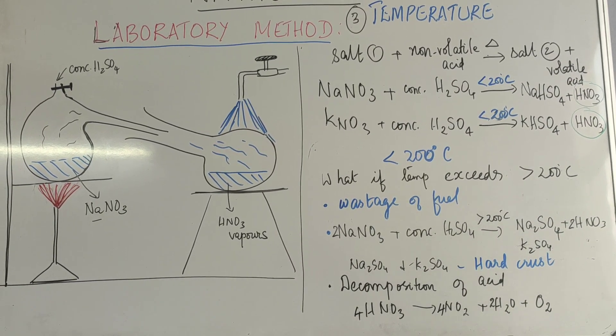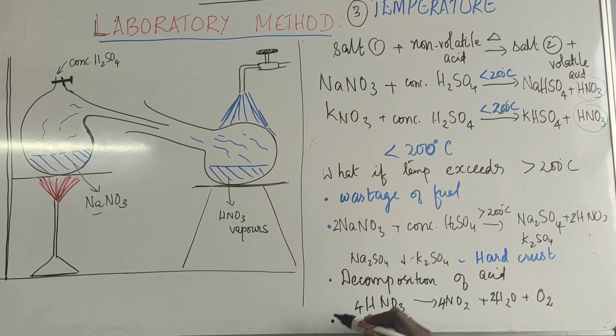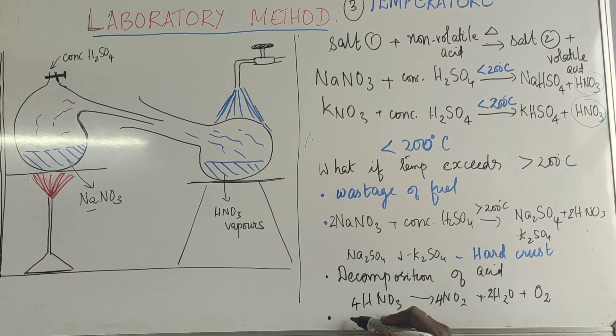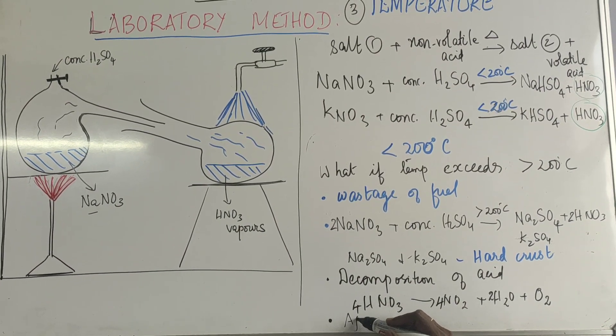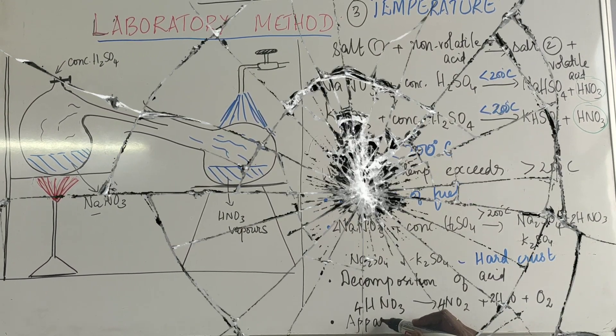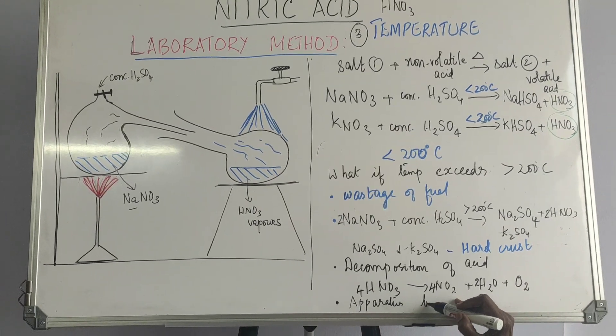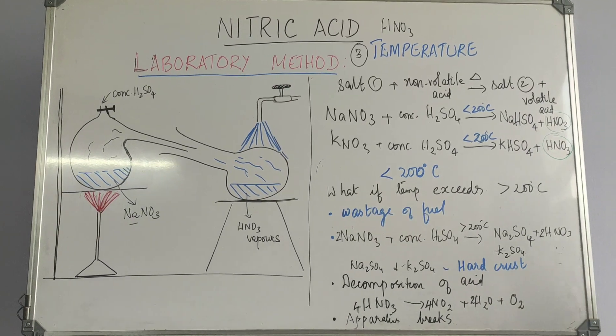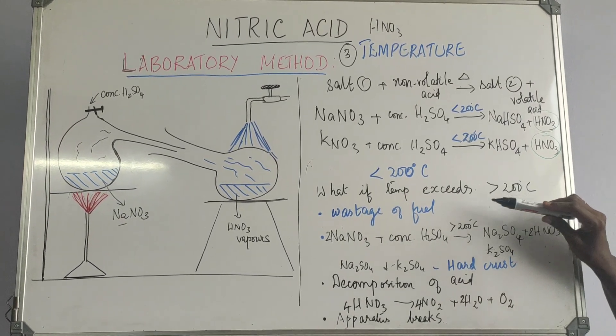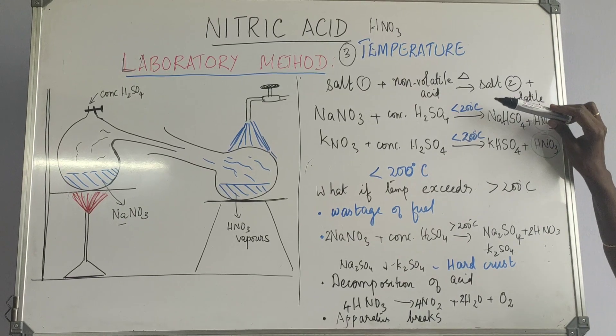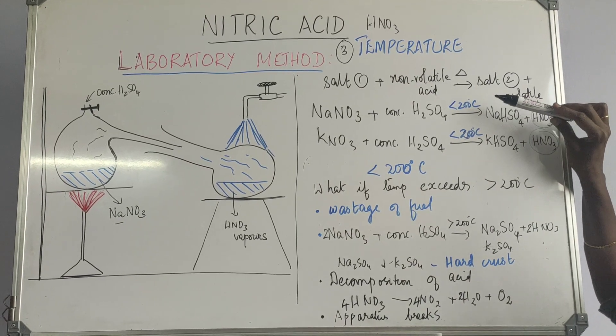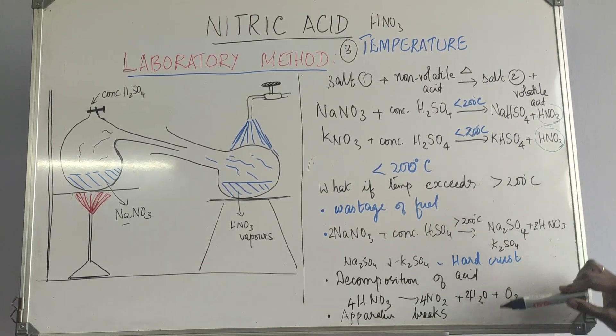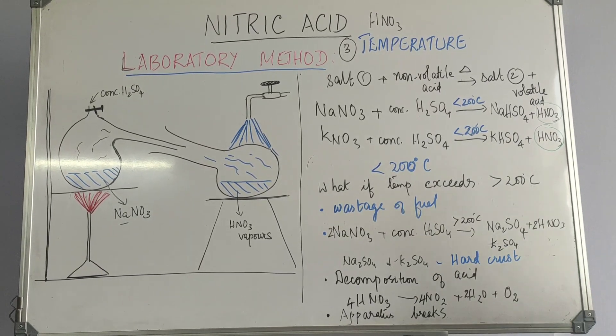And the last one that we need to know about is that this apparatus is made of glass. So the apparatus can break when the temperature increases or when the temperature is above 200. So these are the reasons why it should maintain the temperature at less than 200 degrees. If it goes above, these are the things that will happen if it exceeds 200 degrees.